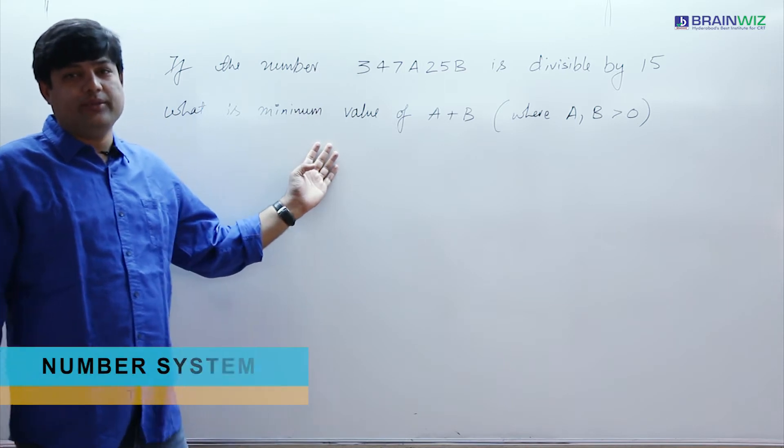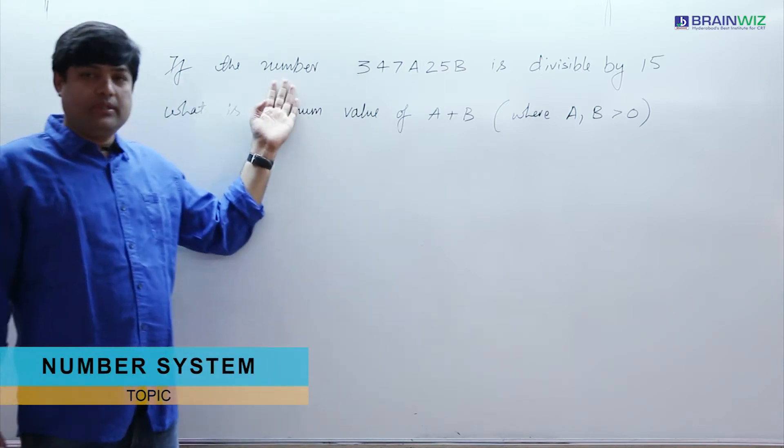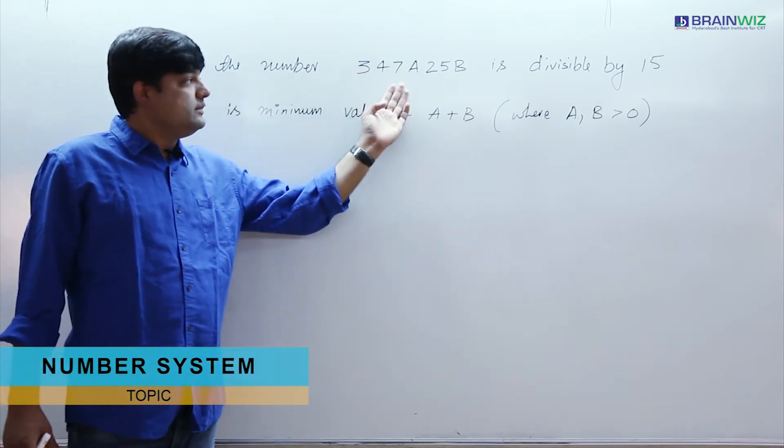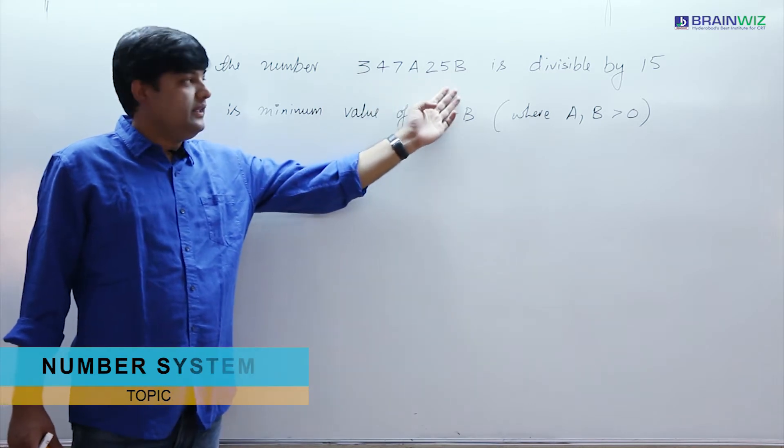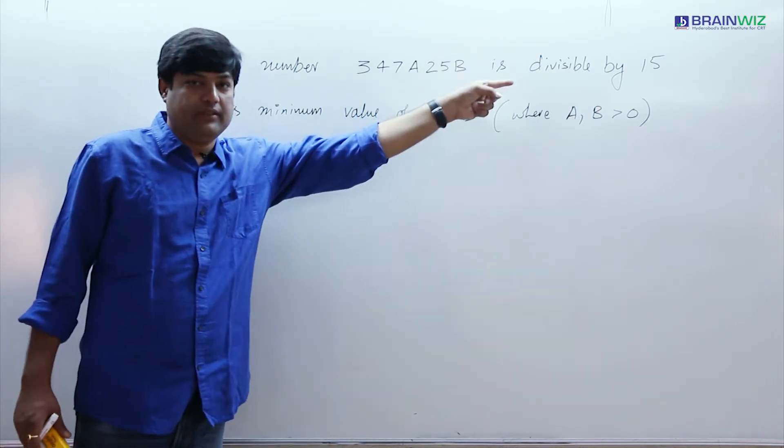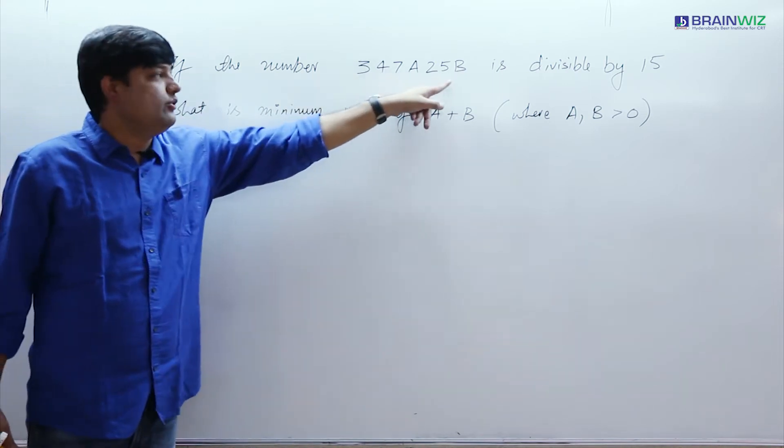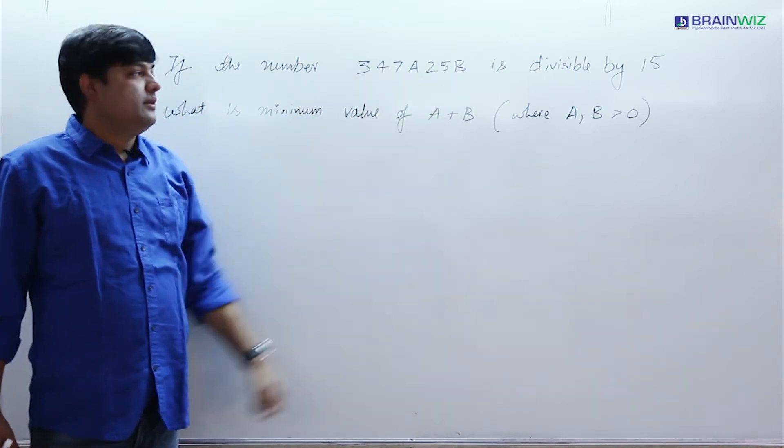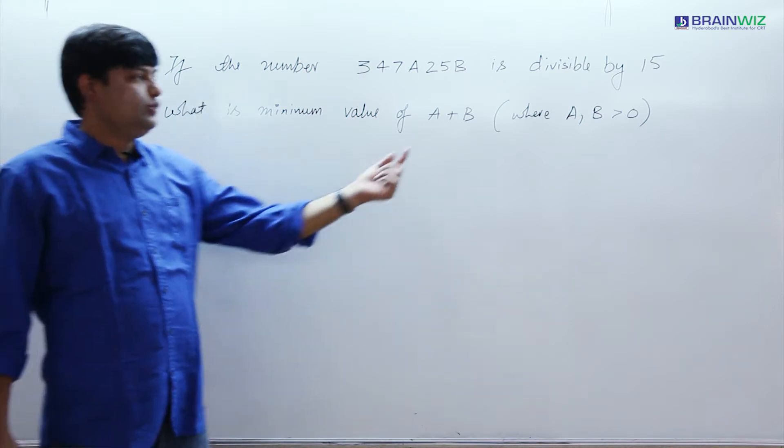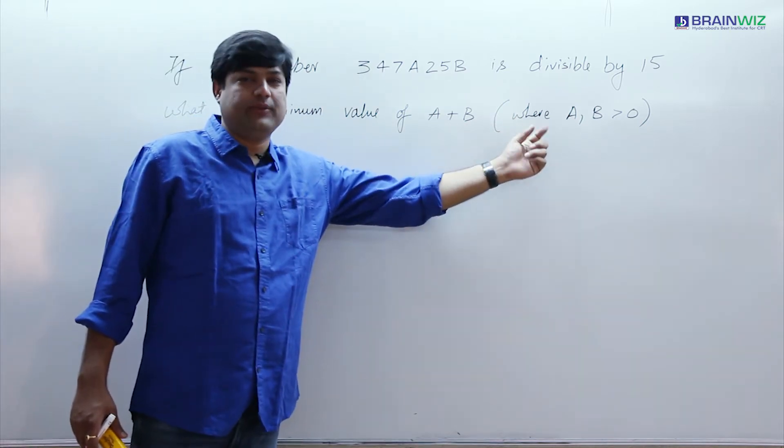In this thing he said that if a number 347A25B has to be divisible by 15, then what is the minimum value of these two missing values which is A and B. And the condition is that these two values A and B have to be greater than 0.